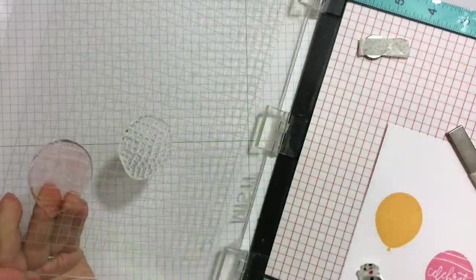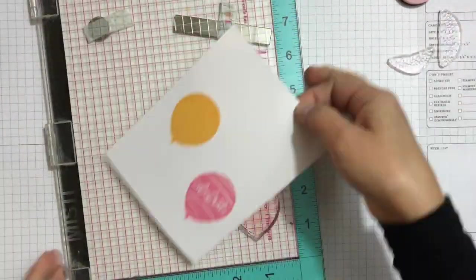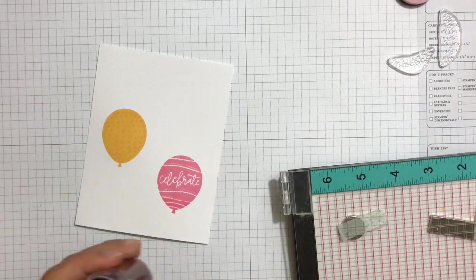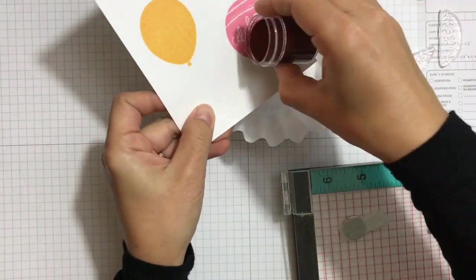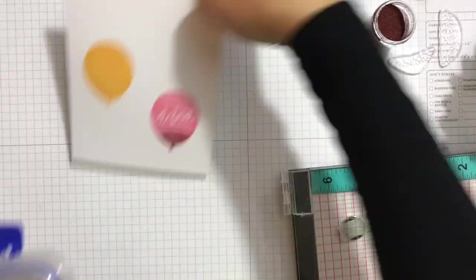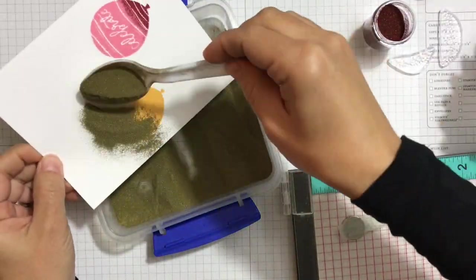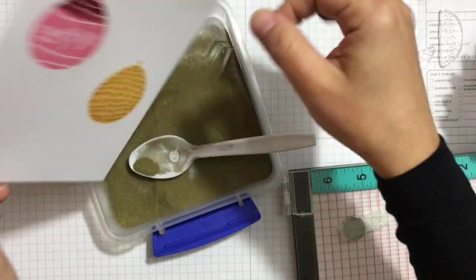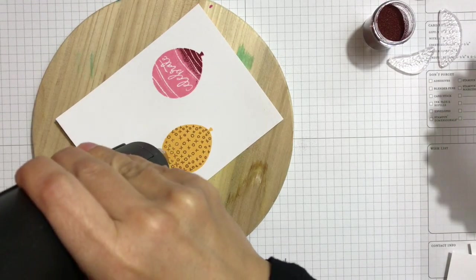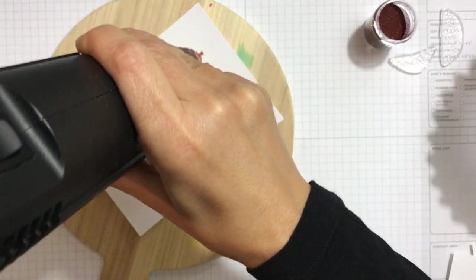So next for the solid balloon and the celebrate balloon I'm just inking the bottom with Versamark and then dabbing it with a towel so I have a more subtle transition between the Versamark and the non-Versamark part. So I applied some rose gold Hero Arts embossing powder under the pink balloon and gold embossing powder onto the yellow balloon and just quickly heat setting that.